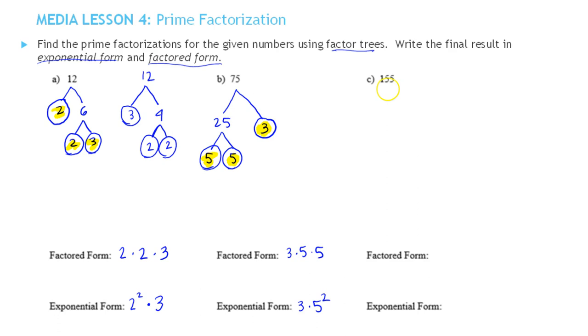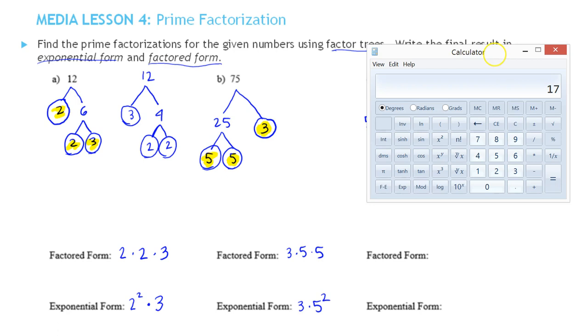Now let's look at 155. It's not even but it ends in a 5, so I know it's divisible by 5. So I'm going to start with a 5. And maybe you know the other number it's divisible by, but if you want you can always do it on the calculator.